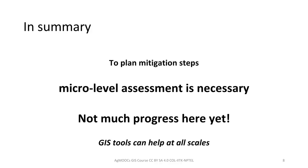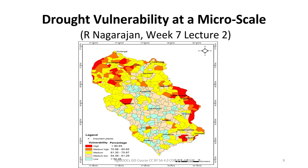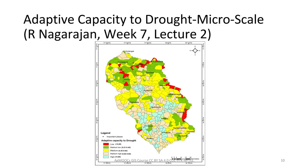One of the best examples of how micro-level assessment is used in drought management has come from Professor Nagarajan, who covered this in another lecture in this course. Here is a cluster of 200 villages where Professor Nagarajan has computed drought vulnerability based on a variety of parameters, but primarily based on rainfall. This map shows village-by-village vulnerability. Professor Nagarajan also showed village-by-village adaptive capacity to drought, which is presented here.